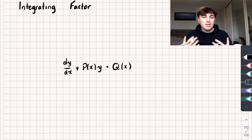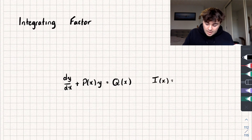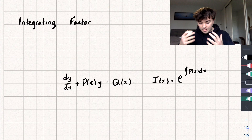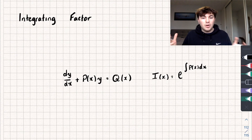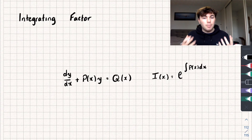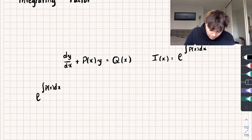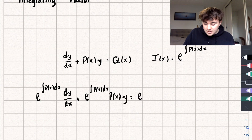So what is this integrating factor? The integrating factor, which we could write as i(x), is equal to e to the power of the integral of p(x) with respect to x. What we do is calculate this integrating factor — which is just going to be some function of x — and then multiply each term in our differential equation by it. If we do that, we get e to the integral of p(x) dx multiplied by dy/dx, plus e to the integral of p(x) dx multiplied by p(x) times y, equal to e to the integral of p(x) dx multiplied by q(x).